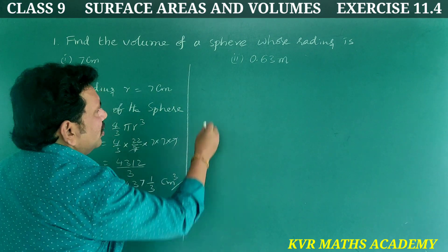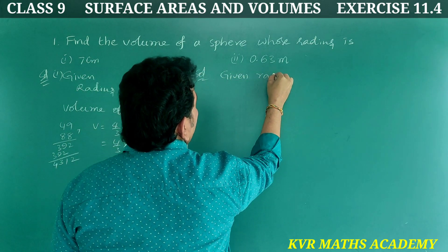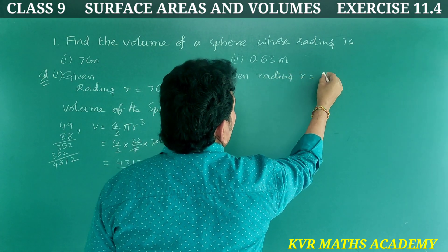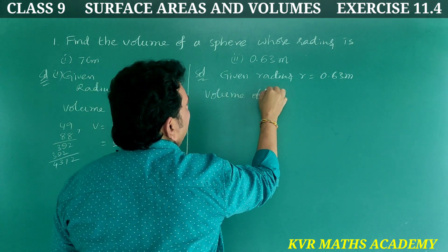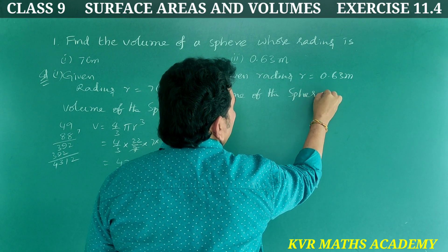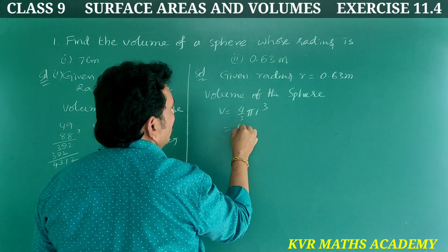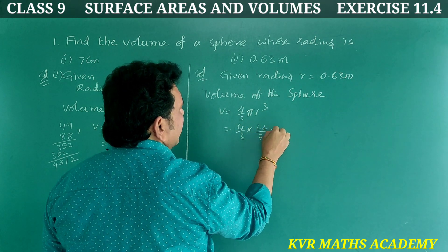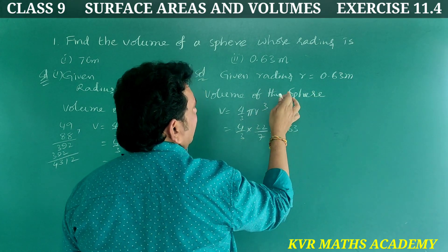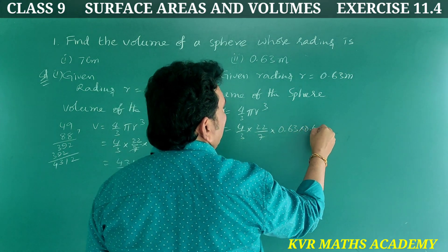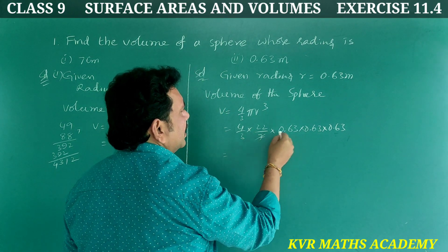Now for the second part: given radius r = 0.63 meters. Volume of the sphere V = 4/3 × π × r³ = 4/3 × (22/7) × (0.63)³, which is 0.63 × 0.63 × 0.63.